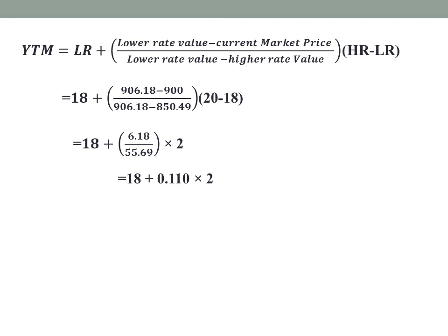Solving: 18 + 6.18 ÷ 55.69 × 2 = 18 + 0.110 × 2 = 18 + 0.22 = 18.22%. So the exact, accurate YTM value is 18.22%. The formula method gives an approximate value, while the trial and error method gives this accurate result of 18.22%.